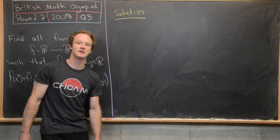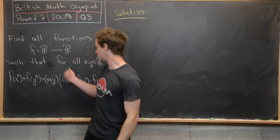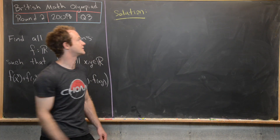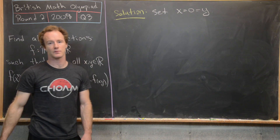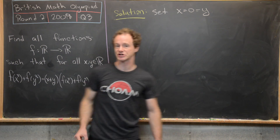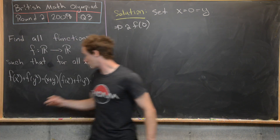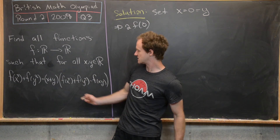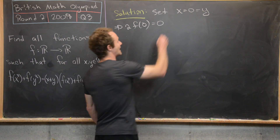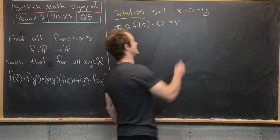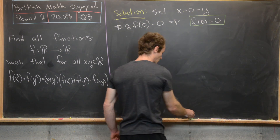Now we're ready to look at a solution, starting with setting x and y equal to some nice values. First, set x = 0 and y = 0. The left hand side becomes 2f(0), and the right hand side becomes zero plus zero times some stuff — which is zero regardless. So we get 2f(0) = 0, giving us our first useful fact: f(0) = 0. This means the function passes through the origin.